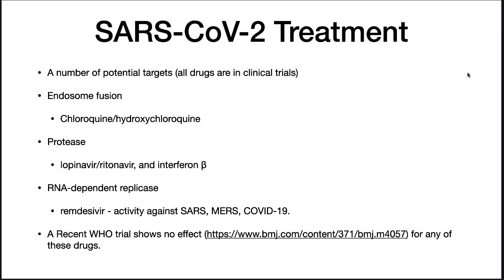Protease inhibitors such as lopinavir, developed for HIV — another RNA virus — along with ritonavir, have also been tried without much success. Interferon beta has shown clinical effectiveness against other coronaviruses and was also being tested against SARS-CoV-2. Finally, RNA replicase inhibitors such as remdesivir, originally developed as a treatment for Ebola, have found success in treating SARS-CoV-2.